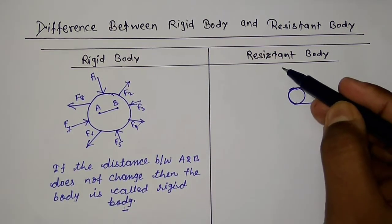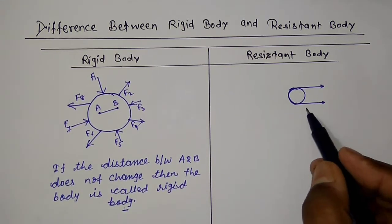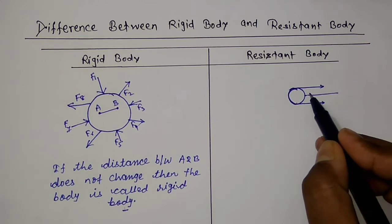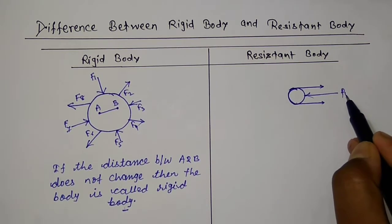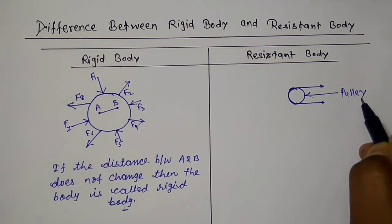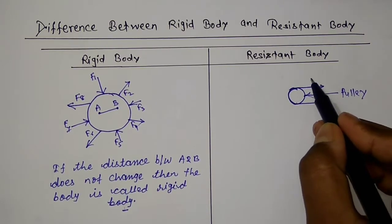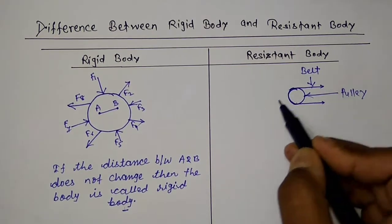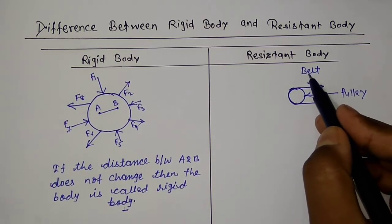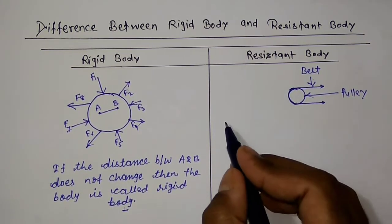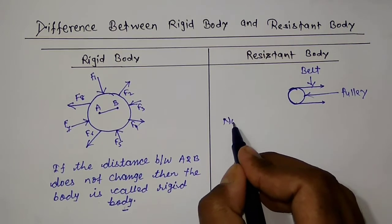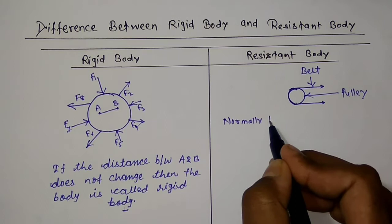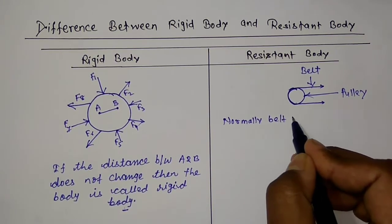Now we will discuss about the resistant body. Here I have drawn a diagram — this is a pulley and this is a belt. Normally the belt is a non-rigid body.